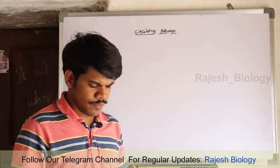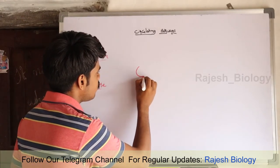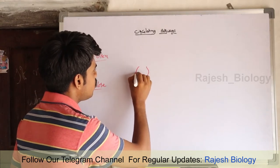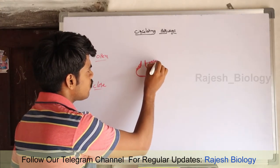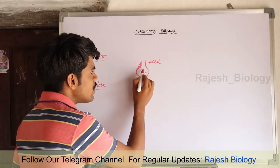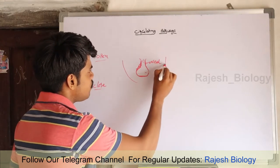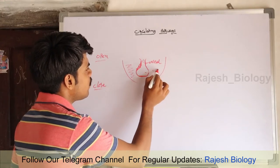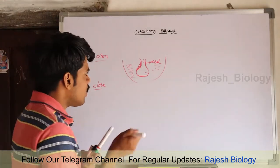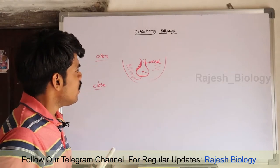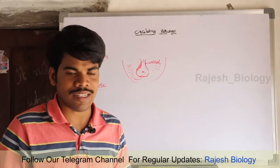In the open type of circulating pathway, the heart sends the blood into the vessels. From the vessel, the blood enters into the body space. After exchange of gases and distribution of nutrients to the body parts, the blood enters into the heart. That means the blood from the vessels enters into the large body spaces known as sinuses.